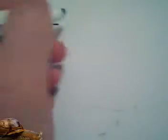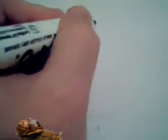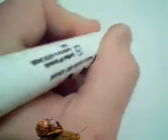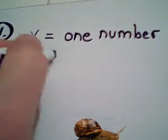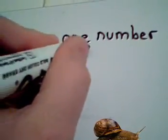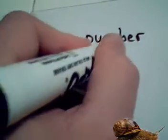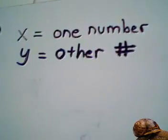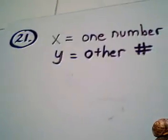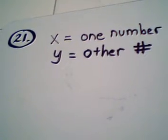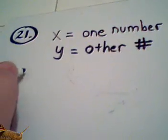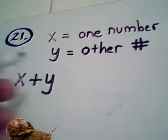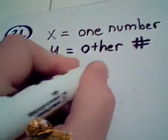X is going to be one of the numbers, and Y is going to be the other number. So we're looking for two numbers. Now, the first fact we're given is that the sum of the two numbers is 20. Your key word there is sum. X plus Y is 20.